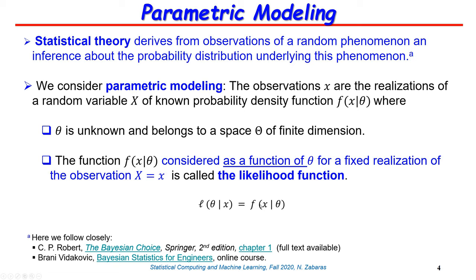Once we write it down, we look at this function as a function of the parameters theta for fixed realizations of the observations. The preferable way of denoting this will be a script L of theta given the observations x. For fixed realizations of x, we look at this as a function of the parameters theta.